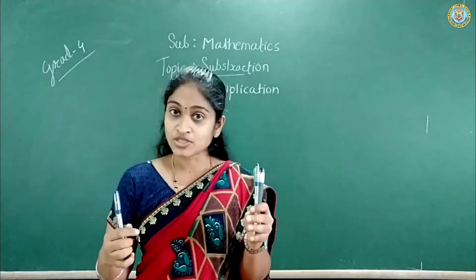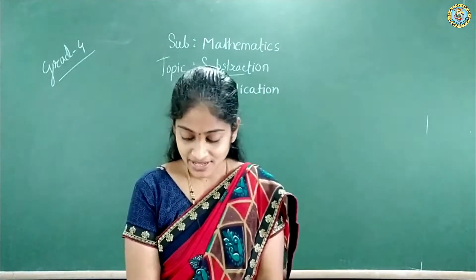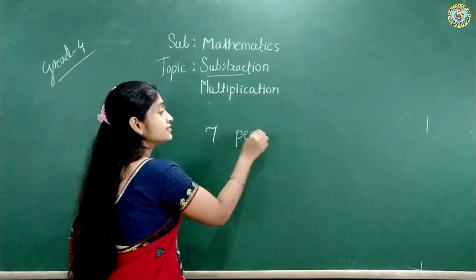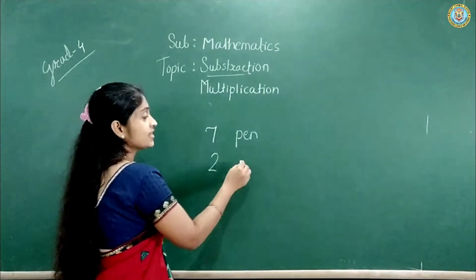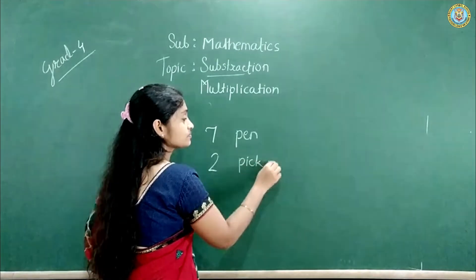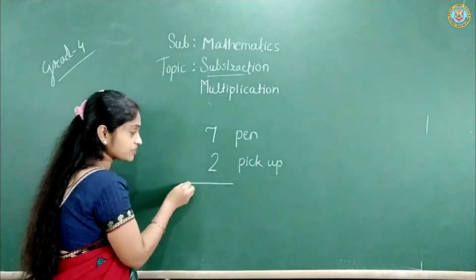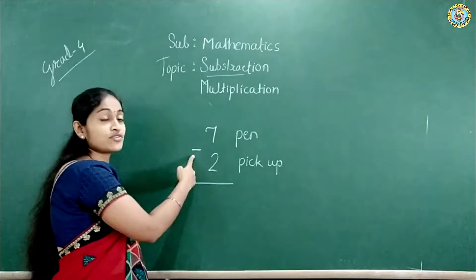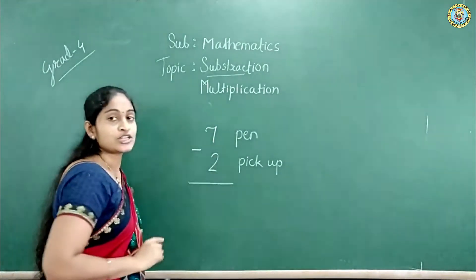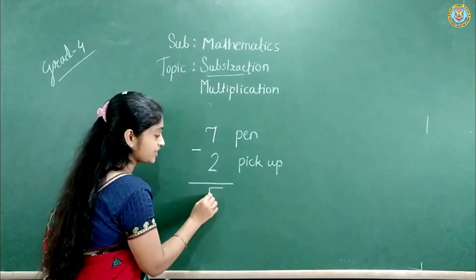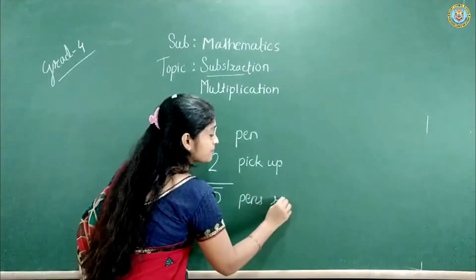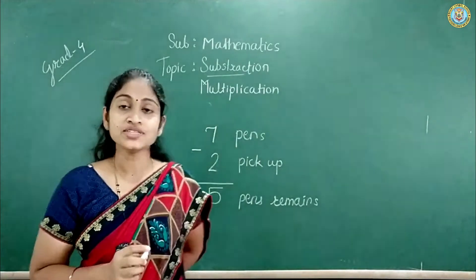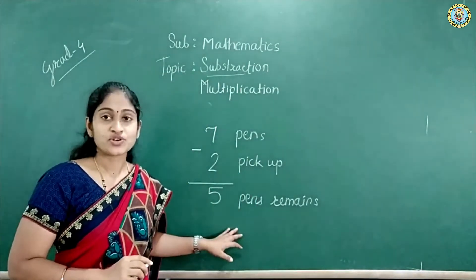We picked up some things from a group. See what we did — I had 7 pens first, then I picked up 2 pens from that. How much will remain with me? For that we have to do subtraction. This is the sign for subtraction. See: 7 minus 2. How much will it be? 5. Very nice — 5 pens remain with me. So this process is called subtraction.